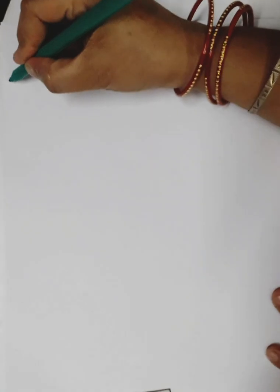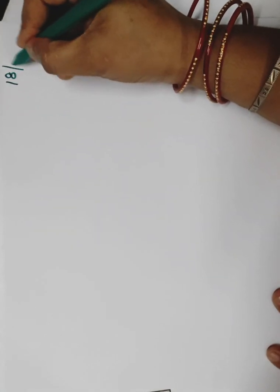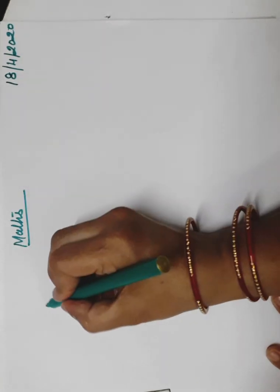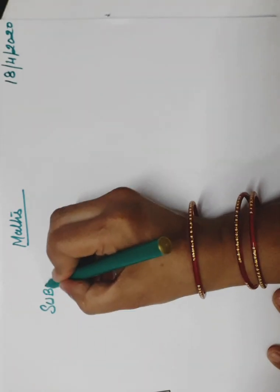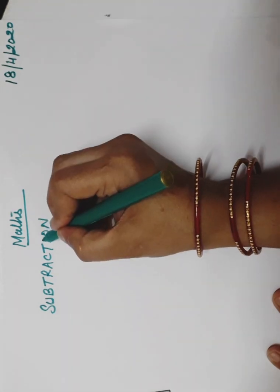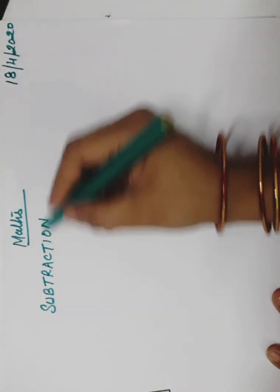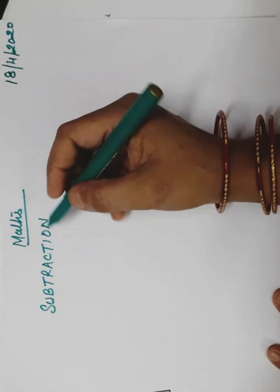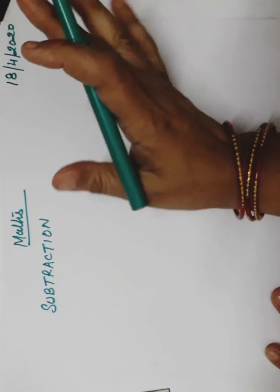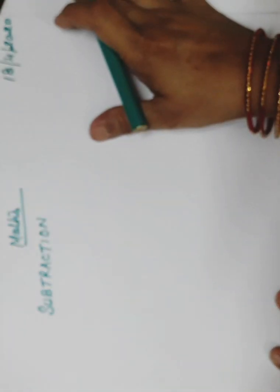So class, first of all write down the date, that is 18th April. Your subject is maths, and we have to do subtraction. I had already written yesterday — addition property, subtraction property, multiplication and division property. We have to learn all these four properties and the sub-properties which come under them.